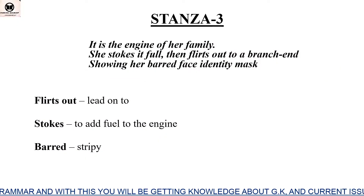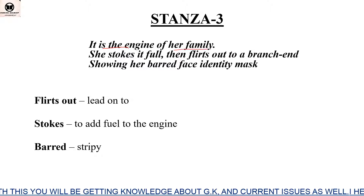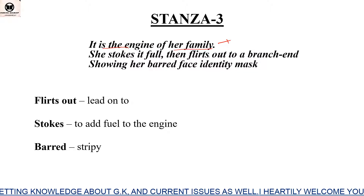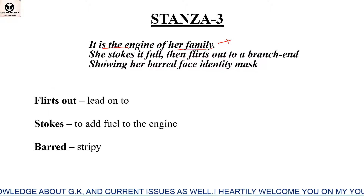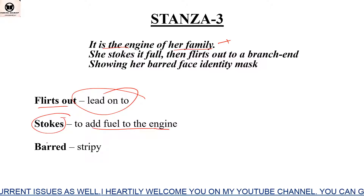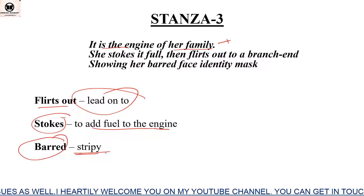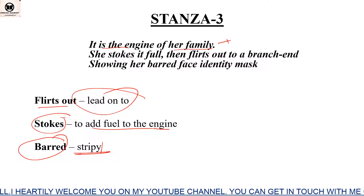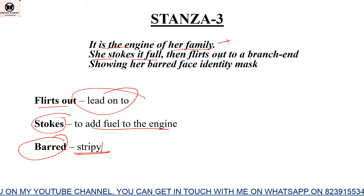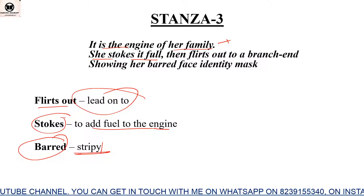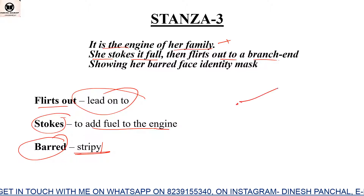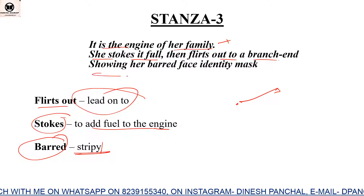Now let's talk about the third stanza: 'It is the engine of her family.' The goldfinch bird works as an engine for its entire family. 'Flirts out' means to lead on, coming to add fuel to the engine. 'Beard' means stripy — where you see stripes. 'She stalks it full, then flirts out to a branch' — she fills fuel for her family, gives them energy, then moves to the end of a branch.